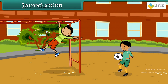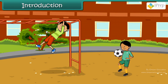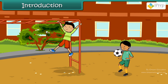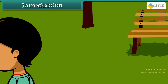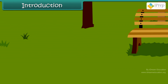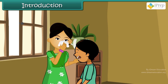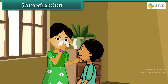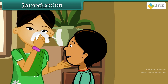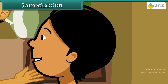Bholla was playing when he heard his eye. He rushed back to his home where his mother blew air in a clean handkerchief and quickly kept it on Bholla's red eyes. She repeated it four to five times. By that time, Bholla was much relieved.